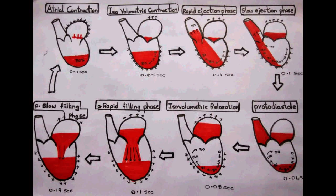As we have known from the conducting system of the heart, the atria are the first ones to contract. Starting with atrial contraction — by the time of atrial contraction, already 80% of the ventricle is filled with blood. This is passive blood filling, which does not require any atrial contraction.